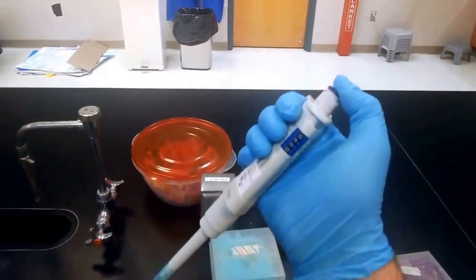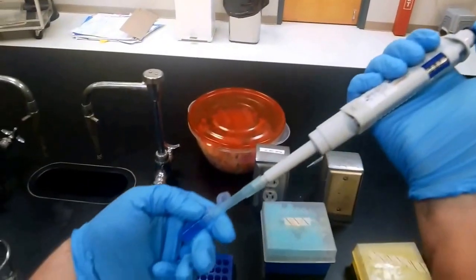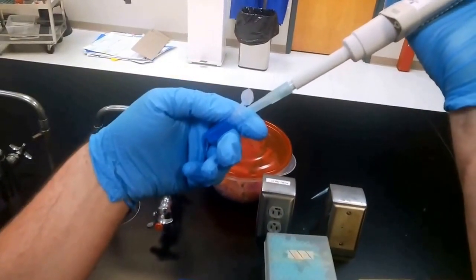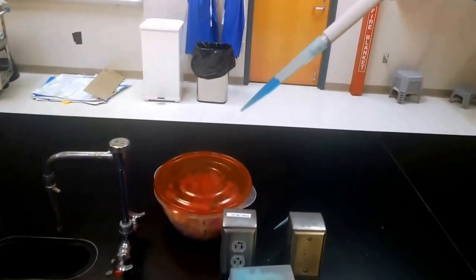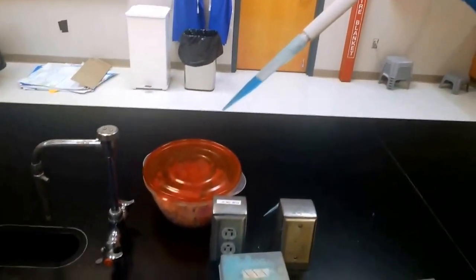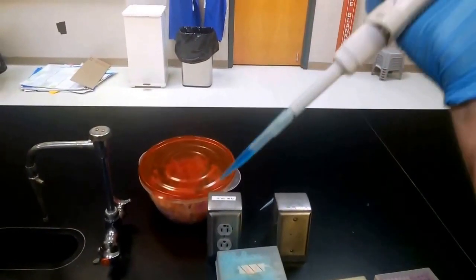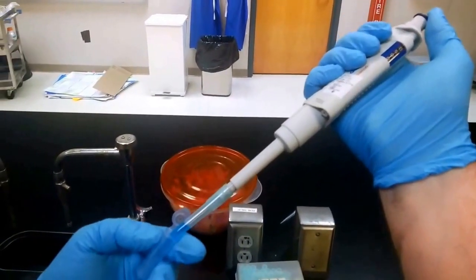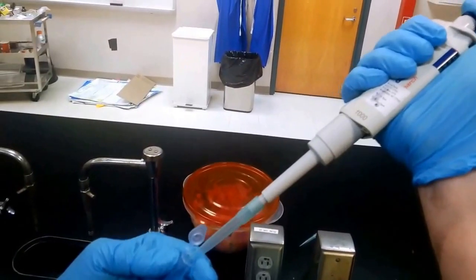Depress to the first stop. All right, dip our tip into the solution that we're pulling from, pull up slowly. As you can see, that's quite a bit more than we moved last time—it's about 500 microliters.